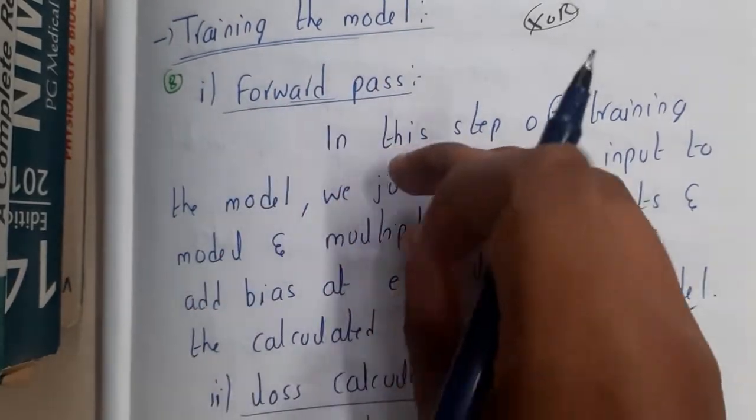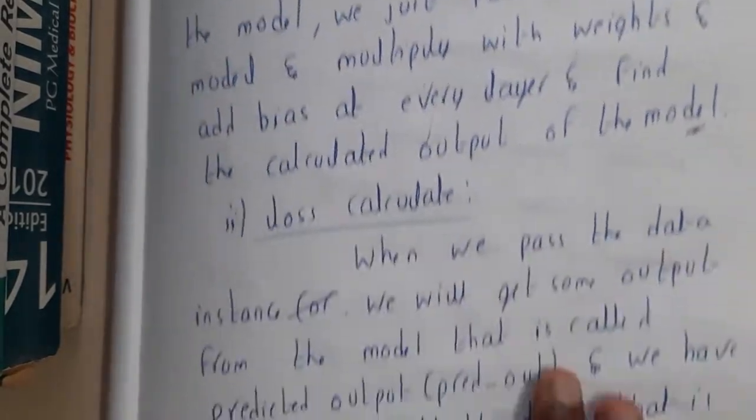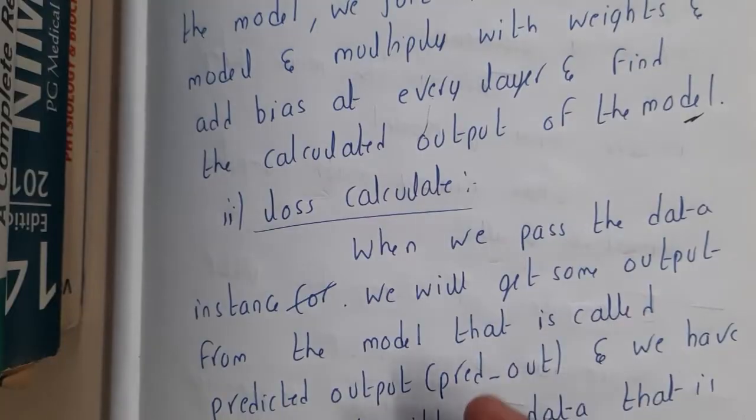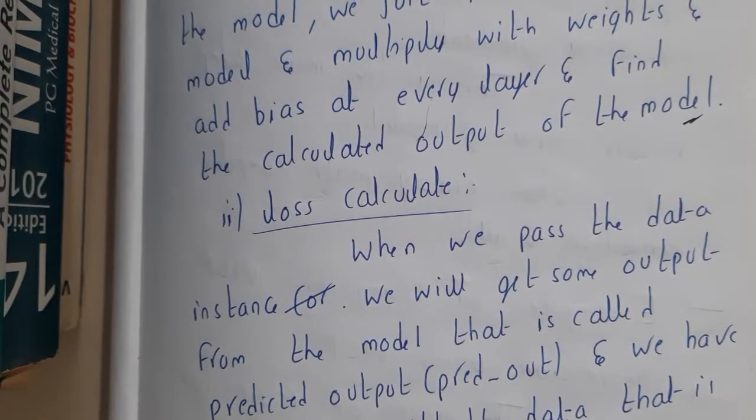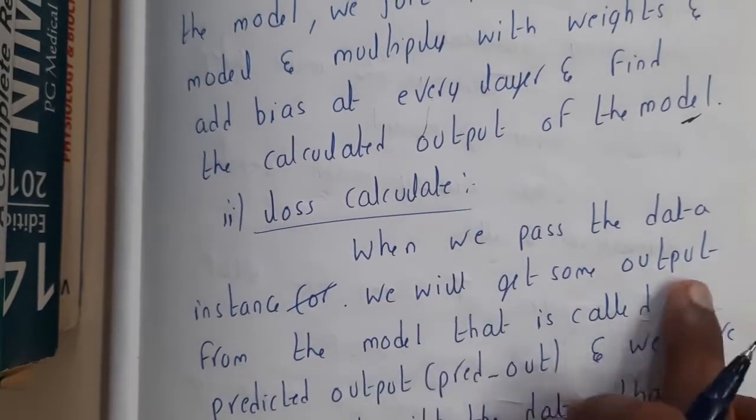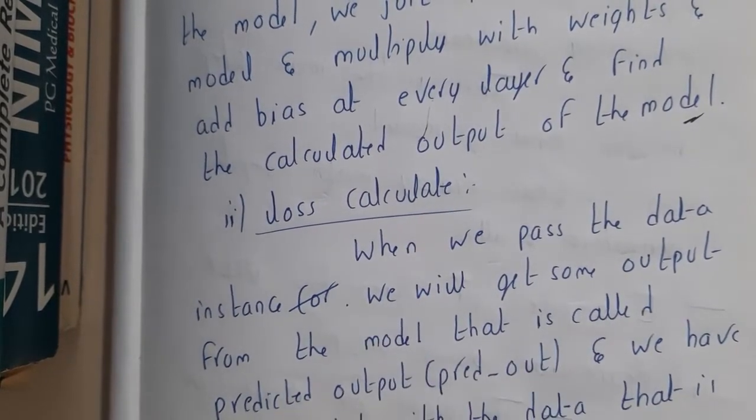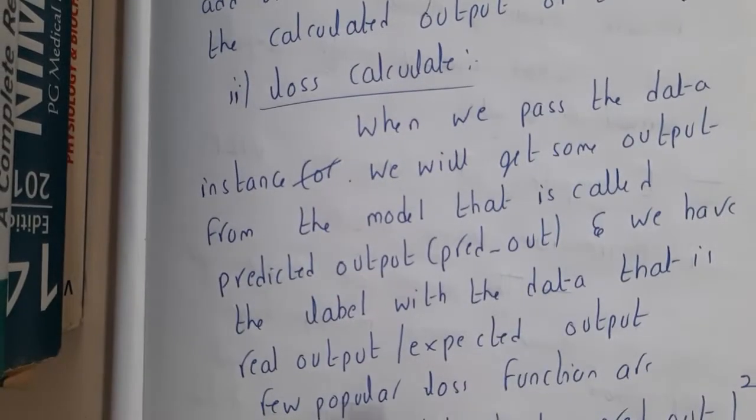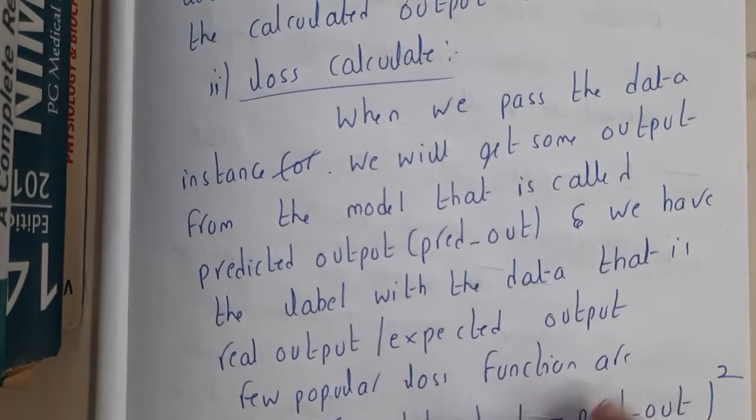Loss calculation: when we pass the data instance, we will get some output from the model that is called predicted output. That is the output which is given by our model. We have